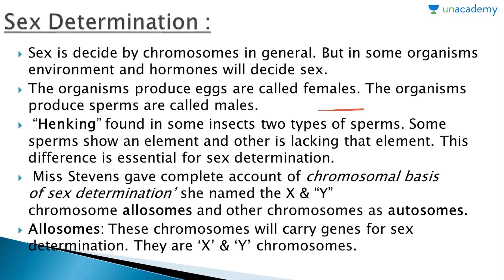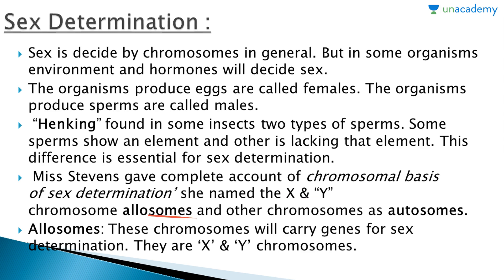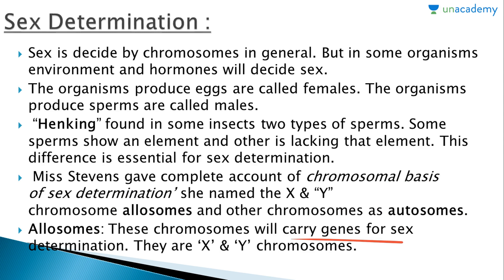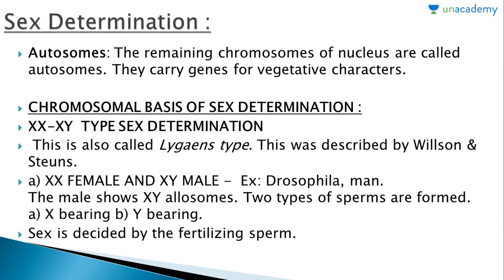Henking found in some insects that two types of sperm exist — some sperms show an element and others are lacking that element. This is essential for sex determination. Miss Stevens gave a complete account of the chromosomal basis of sex determination and named them as X and Y chromosomes, called allosomes, and other chromosomes as autosomes.